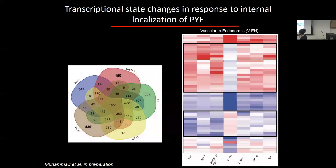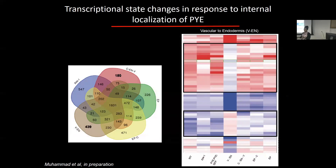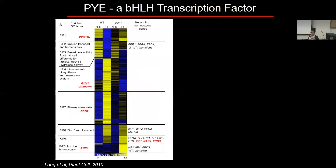To gain insight into this, we did RNA-seq analysis of lines where Popeye moved from the vasculature to the endodermis, or to the epidermis and cortex. We identified a significant number of genes that switched from off to on, or on to off, in specific localization lines. This provides an exciting set of candidates that might explain how Popeye does different things depending on whether it's in the vasculature, endodermis, or cortex. That work is in preparation.